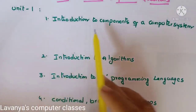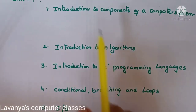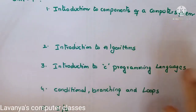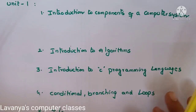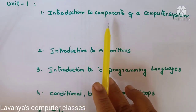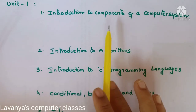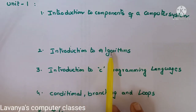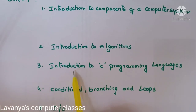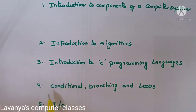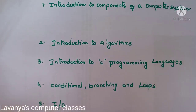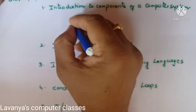Unit 1 is divided into 5 chapters. One is Introduction to Components of a Computer System — this chapter is totally an introduction about computers. Second is Introduction to Algorithms. Third is Introduction to C Programming Language. Fourth is Conditions, Branching and Loops. Fifth is I/O. It is a little bit lengthy unit. In the introduction to computers, we learn what are the components of a computer.